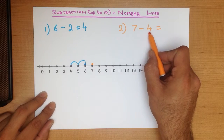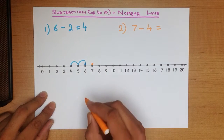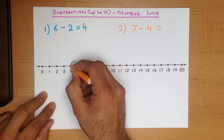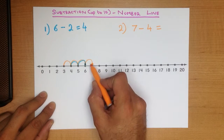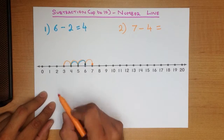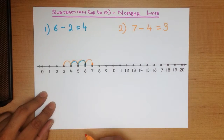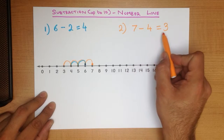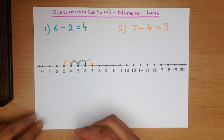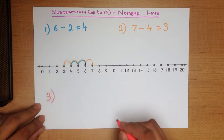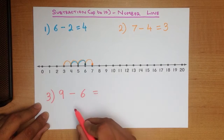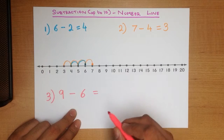It tells us here: 4 jumps. So we're starting at 7 and we have to make 4 jumps back: 1, 2, 3, 4. We started at 7 and made 4 jumps back. What number do we land on? 3. And that is our answer — 7 minus 4 equals 3.